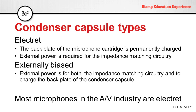Depending on the power requirements, condenser microphones can come in two types: electret and externally biased. On electret microphones, the backplate is permanently charged, and external power is only required for the impedance matching circuitry. On externally biased microphones, external power is required for both the impedance matching circuitry and to charge the backplate of the condenser capsule. Externally biased microphones are more common in high-end recording microphones, while in the AV industry, most microphones are going to be of the electret type.